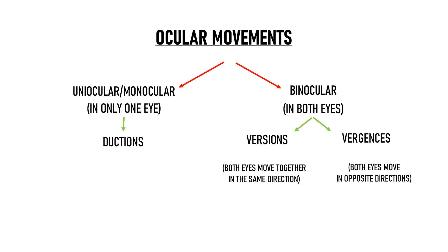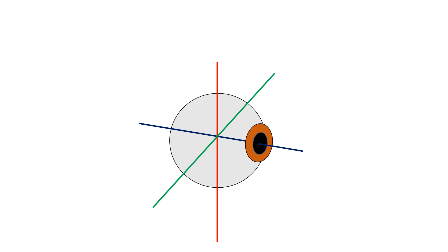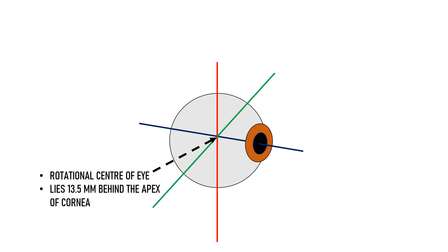Let's understand Ductions, Versions, and Vergences in detail. Ductions refer to the movements involving only one eye, independent of the movements happening in the opposite eye. Uniocular Movements are only possible along three imaginary axes that pass through the rotational center of the eye.